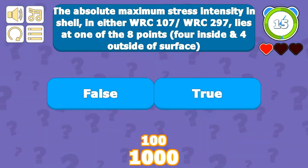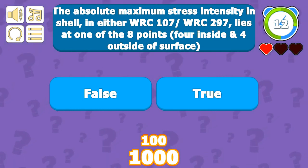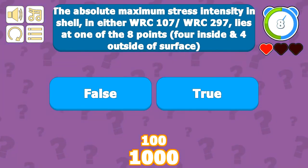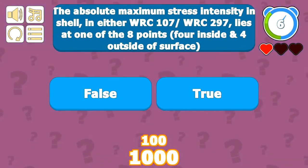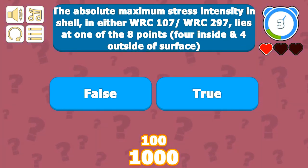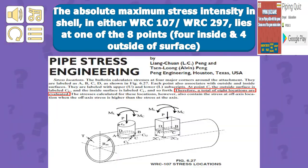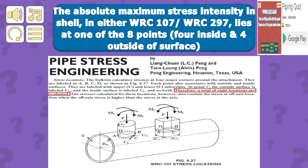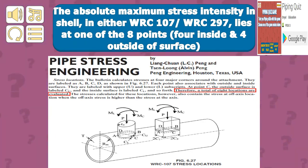The absolute maximum stress intensity in the shell in either WRC 107 or WRC 297 lies at one of eight points — four inside and four outside — but the statement about 'researchers' is false. As noted in the book Pipe Stress Engineering by L.C. Peng, a total of eight locations are evaluated, giving a clear pictorial representation of the eight points on the four upper and four lower surfaces of the shell.